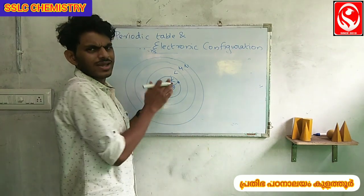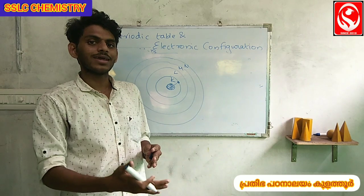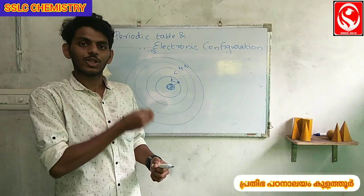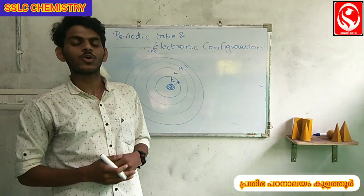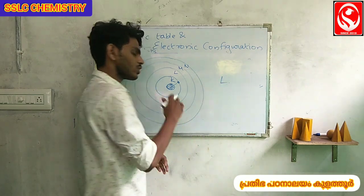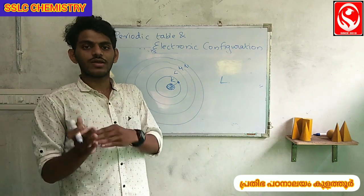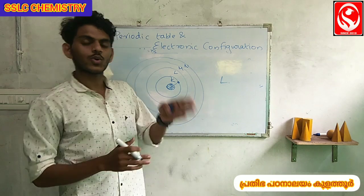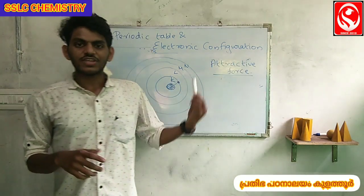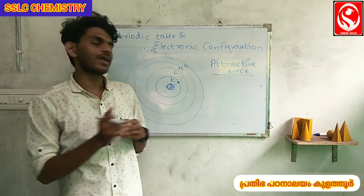Now, if we need a force of attraction for the nucleus, the nucleus will attract electrons in the K shell most strongly. With the K shell, there is a strong force of attraction. When we go to the L shell, the force of attraction is a little bit less than the K shell. The attractive force between the nucleus and electrons decreases as we move outward.